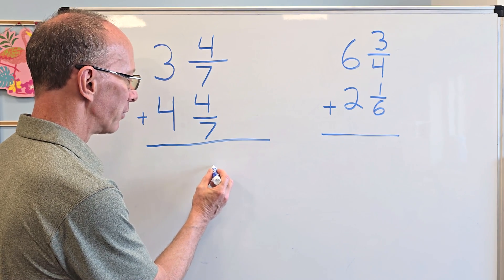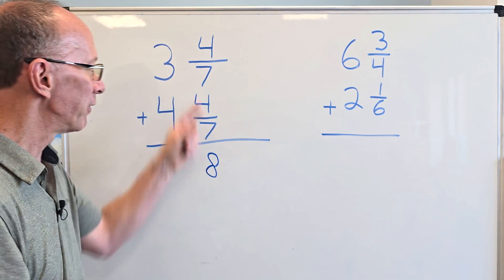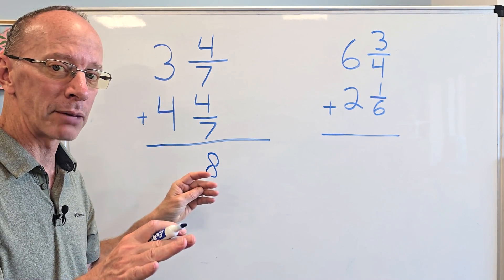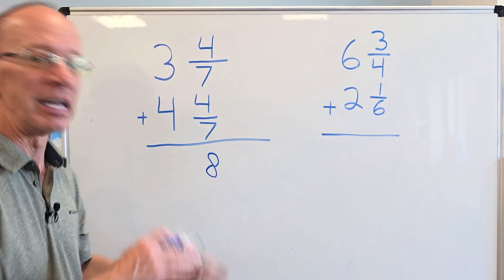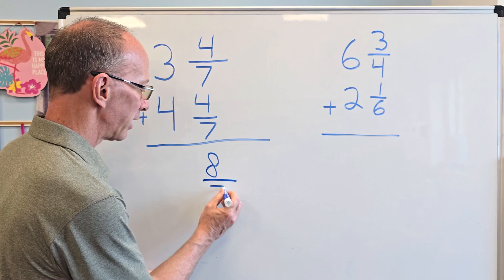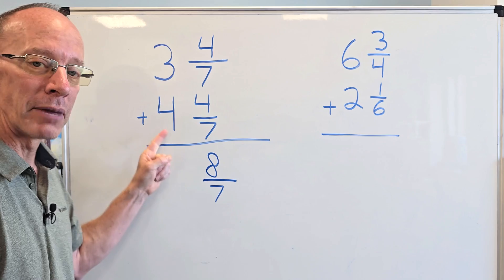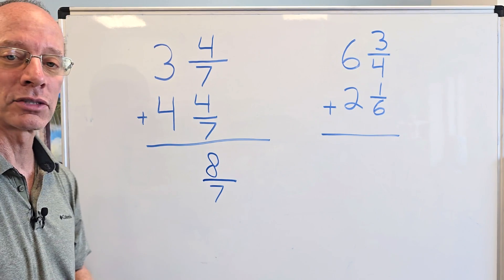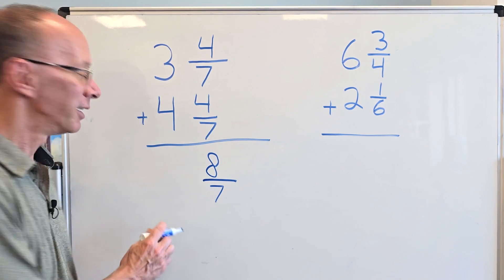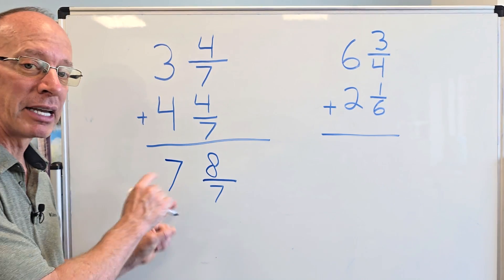So I'm going to put 8 right here. I'm going to rewrite this. I'm going to put 8 right here, and I'm going to keep the denominators the same. If the denominators are the same, keep it the same. So I'm going to put 7 right there, and then I add my whole numbers. I have 4 plus 3 equals 7. So this is my mixed number.